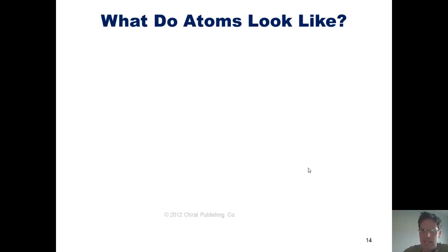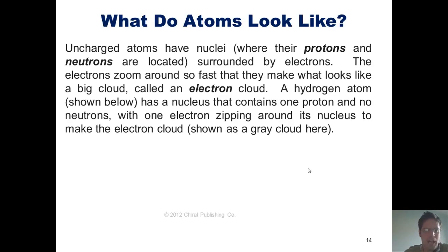So what do atoms look like? Well, uncharged atoms have nuclei, which is the region where their protons and neutrons are located, which are surrounded by electrons.